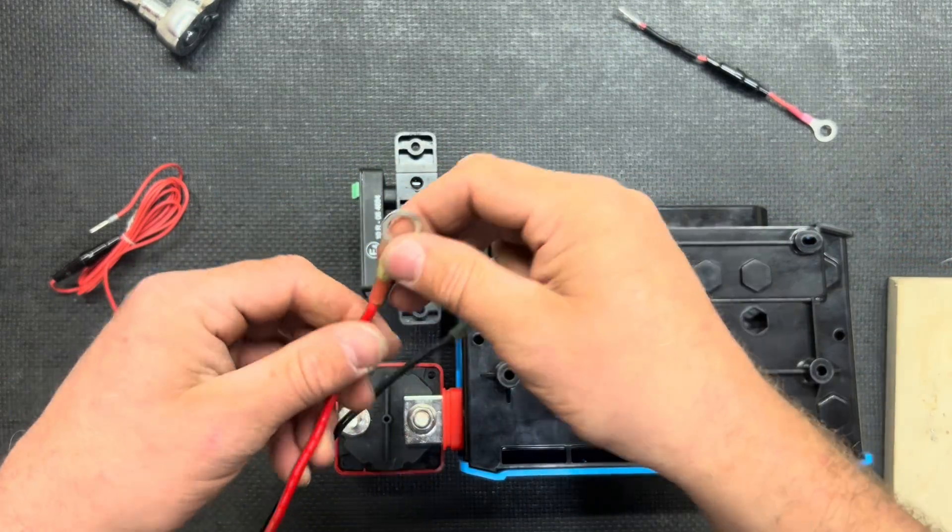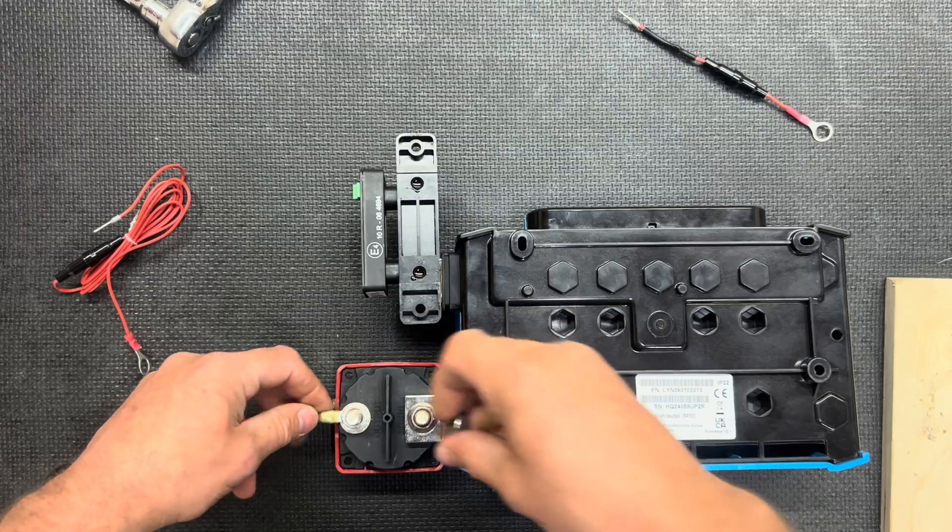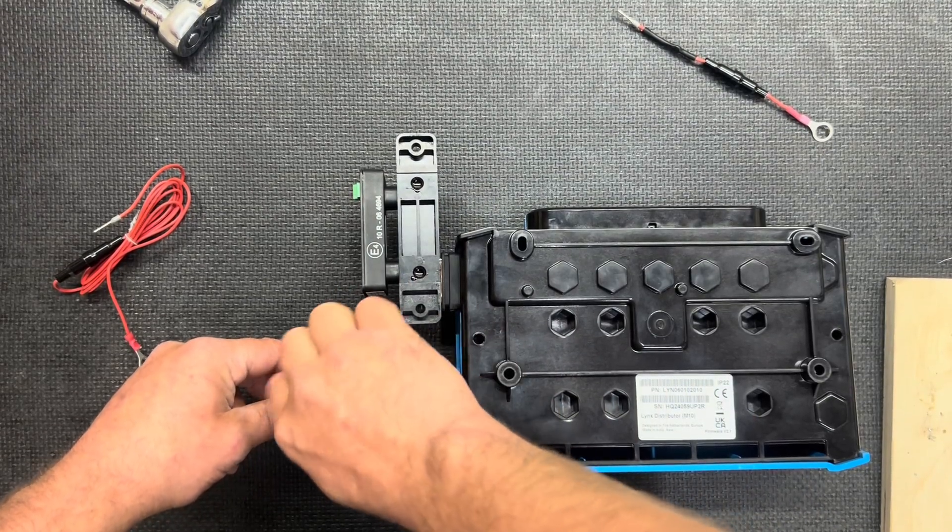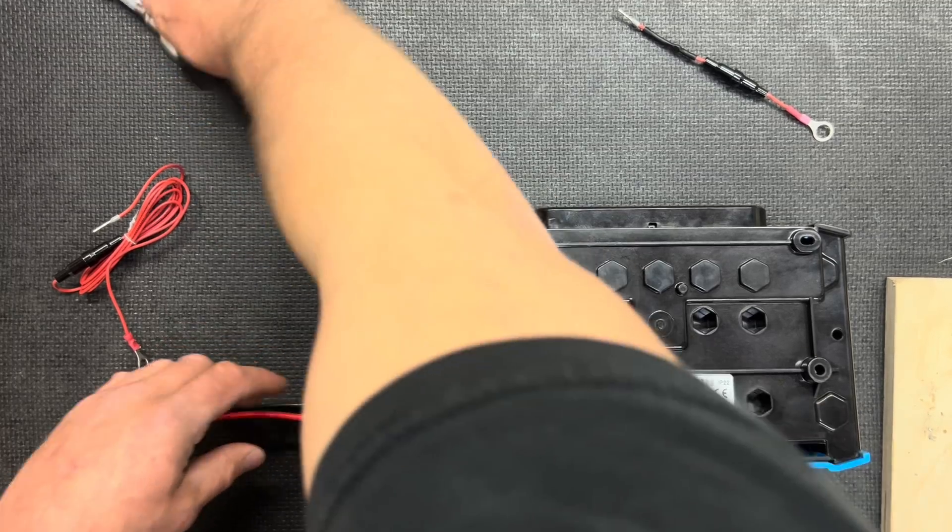Because I'm doing this on the bench top, I'm going to use this SAE plug as our power source which we're going to add to the other side of the battery disconnect here and just snug that up.